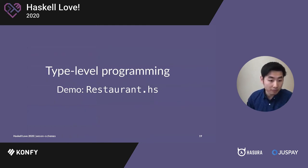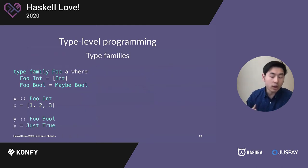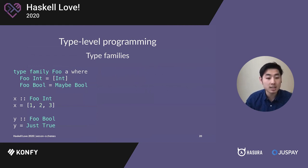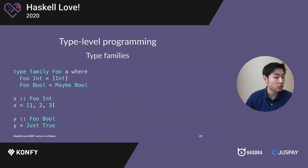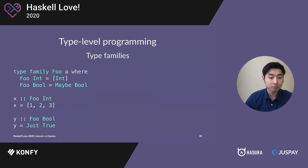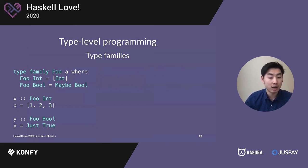One final technique to go over is type families. Type families are basically functions that operate on types instead of values. So when you apply int to foo, it resolves to a list of int, and similarly foo bool will resolve to maybe bool. I haven't gone over all the techniques of type-level programming, but we should know enough to actually implement AESON Schemas.